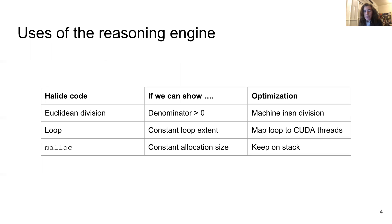Let's set the stage and talk about a few cases where the Halide compiler's reasoning engine is used. For example, Halide uses the Euclidean definition of division. This requires several instructions. But if we could show that the sign of the denominator is positive, we could save some instructions and substitute in the machine division instruction instead. So when we see a division taking place, we're going to ask the reasoning engine if we can show that the denominator is greater than zero. And if it can show that, then we perform the optimization.